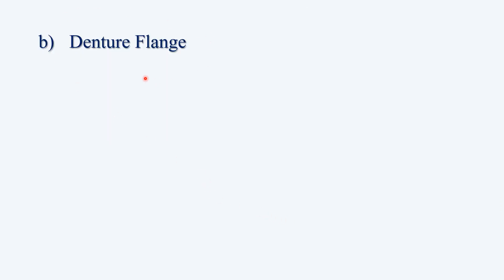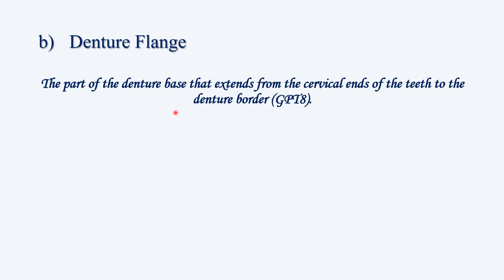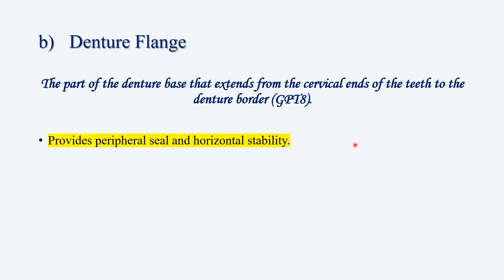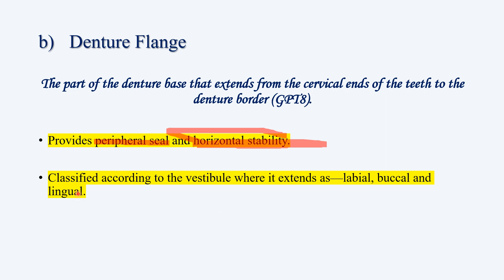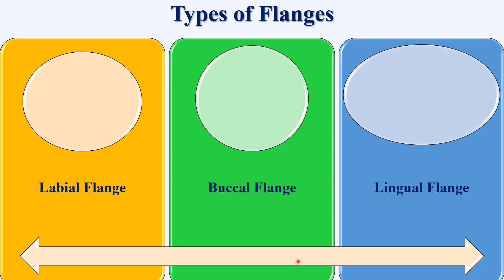The next part is the denture flange area. Flange is the part of the denture base which extends from the cervical ends of the teeth to the denture border — that is the GPT-8 definition. It provides peripheral seal and horizontal stability. It is classified according to the vestibule where it extends: labial, buccal, and lingual.